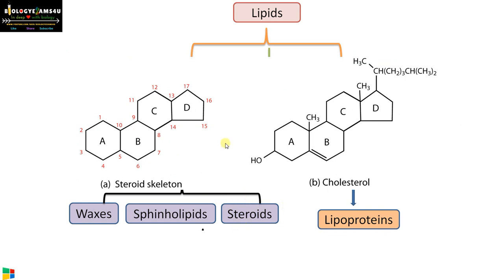Now the third one: steroids. Steroids are made up of 17 carbon atoms and are four-ringed. Rings A, B, C are six-membered rings (cyclohexanes) and D is a cyclopentane ring. The classical example is cholesterol, consisting of four rings. If the group is replaced by OH, then it is estradiol. So steroids are made up of 17 carbons in four carbon rings.